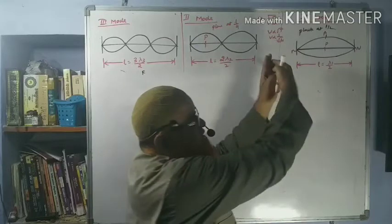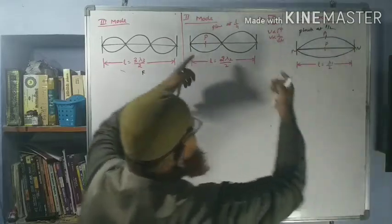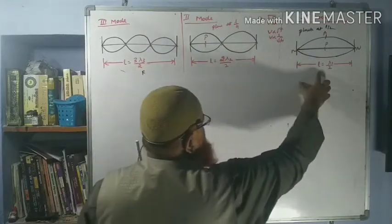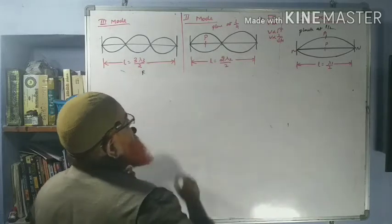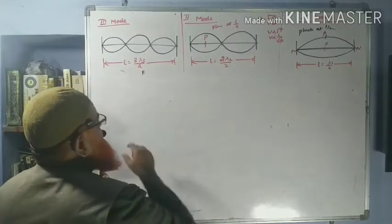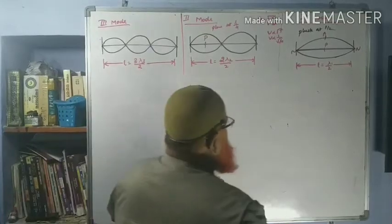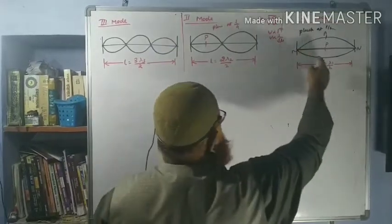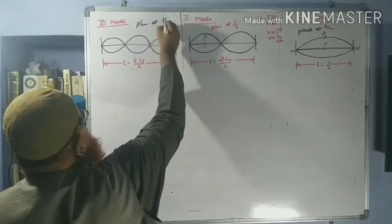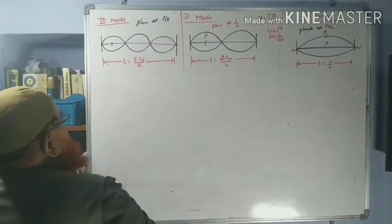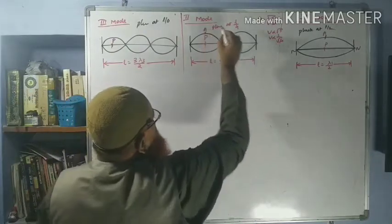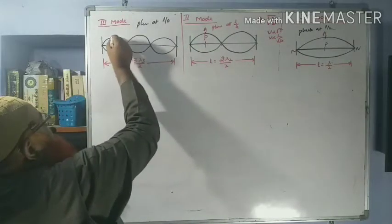In the first mode the wavelength is larger, and in subsequent modes the wavelength reduces. We take wavelengths as λ1, λ2, and λ3 respectively. Wherever you pluck, you get an antinode at that point. You pluck for the first loop, and the remaining loops form automatically.